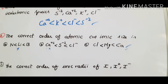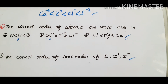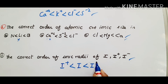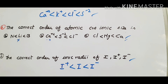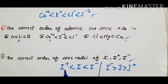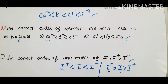Next question: the correct order for the same element iodine in different charge states. More positive charge means less size. So: I+ is less than I is less than I-. In other words, I- is greater than I is greater than I+. The cation is always smaller than the neutral atom, and the anion is always larger than the neutral atom.